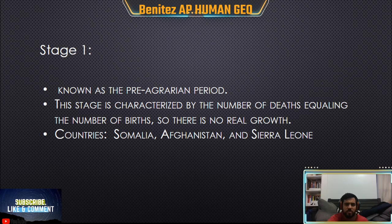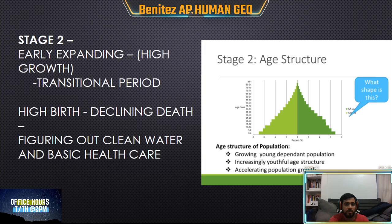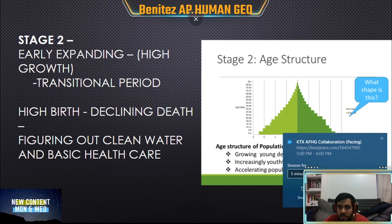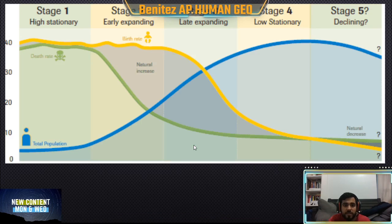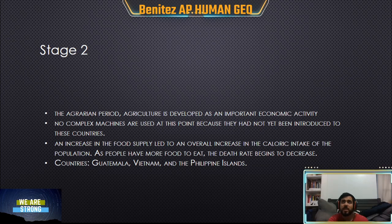In stage two, we still have a lot of babies being born, but now we're starting to see a declining death rate. People are figuring out how to use clean water, there are more healthcare services, and society is becoming more advanced. The birth rate is really high, but the death rate dips significantly. As the death rate declines, total population begins to increase — there are fewer people dying, so there are more people alive. Examples of countries in stage two include Guatemala, Vietnam, and the Philippines. Many stage two countries focus heavily on agriculture.